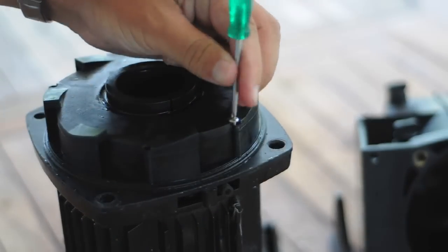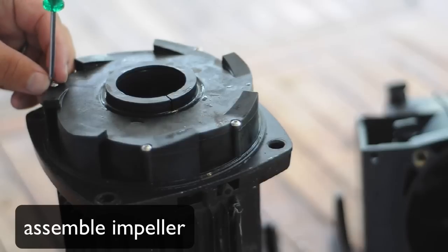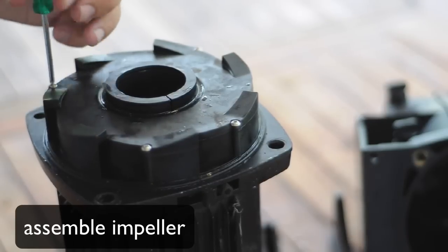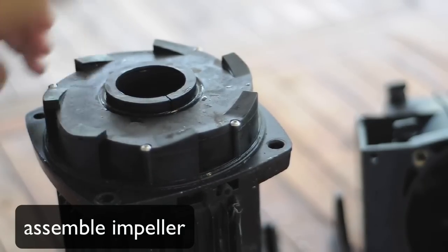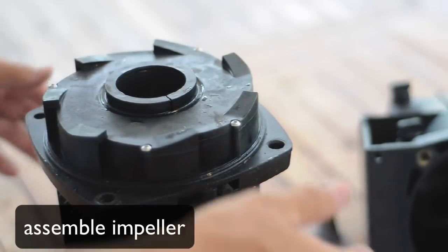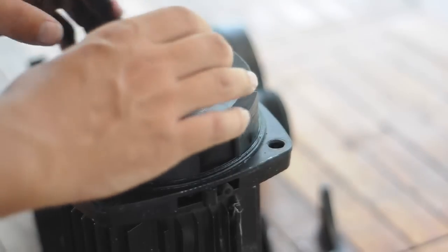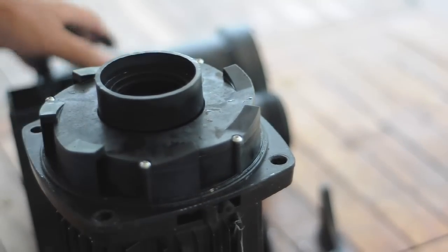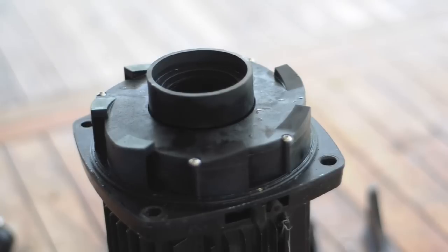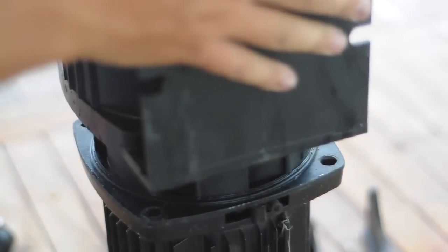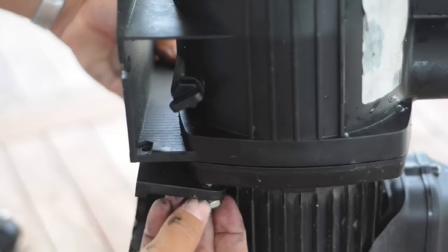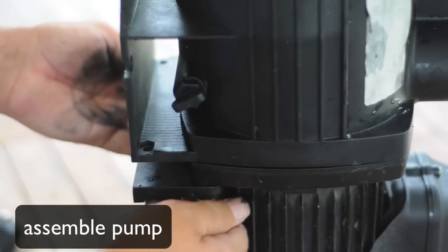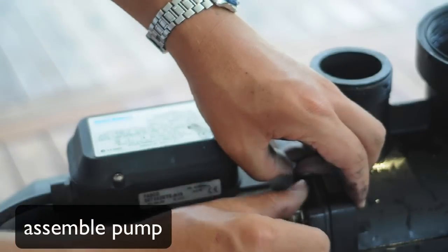Assemble the caps and seals back together. Now we can start to assemble the pump back together, making sure we put all the right screws in the right place.